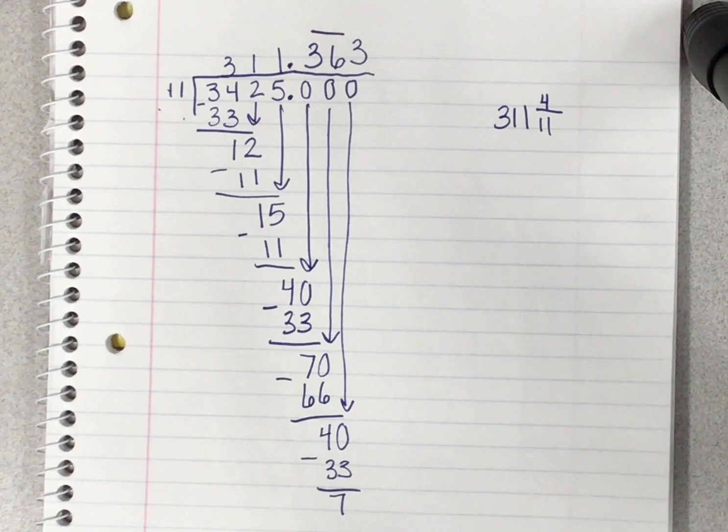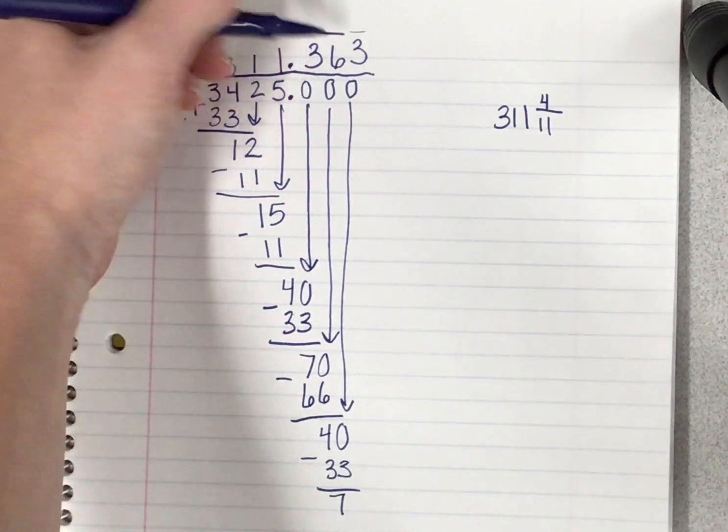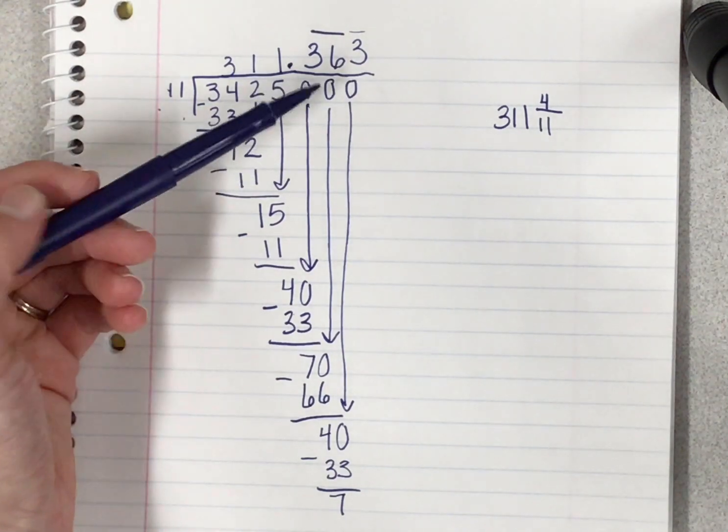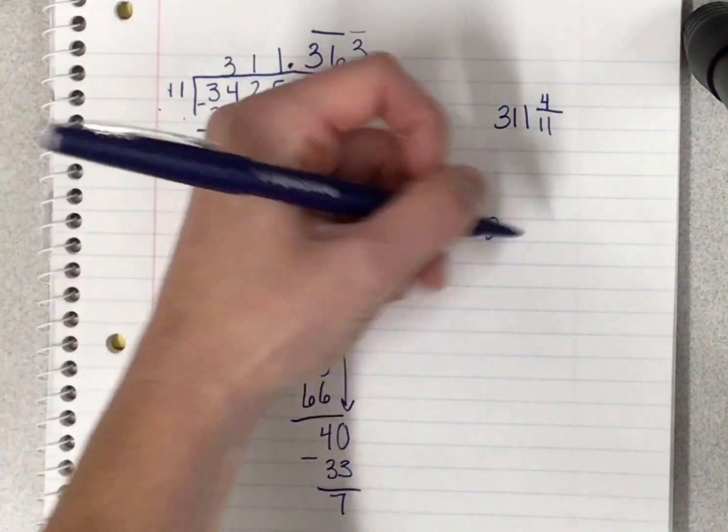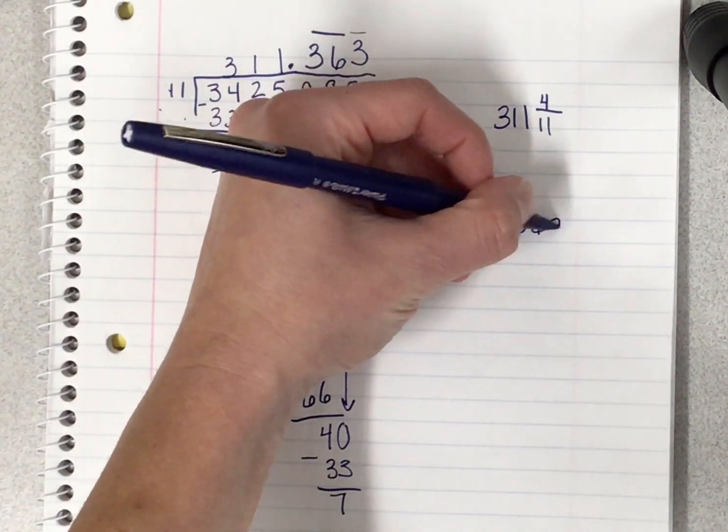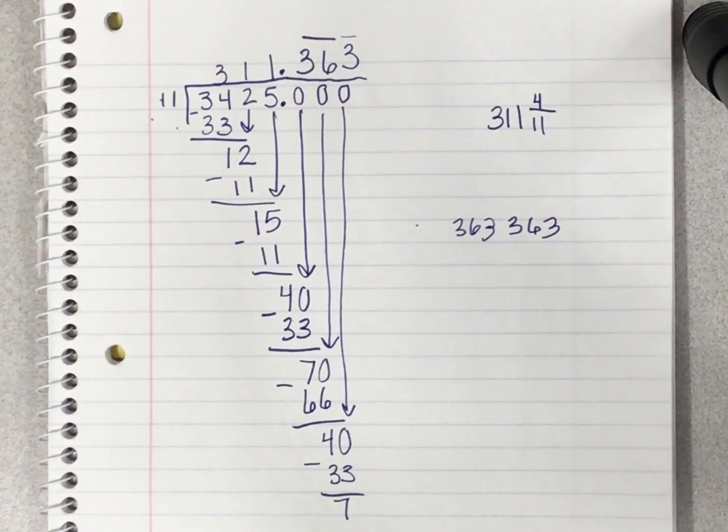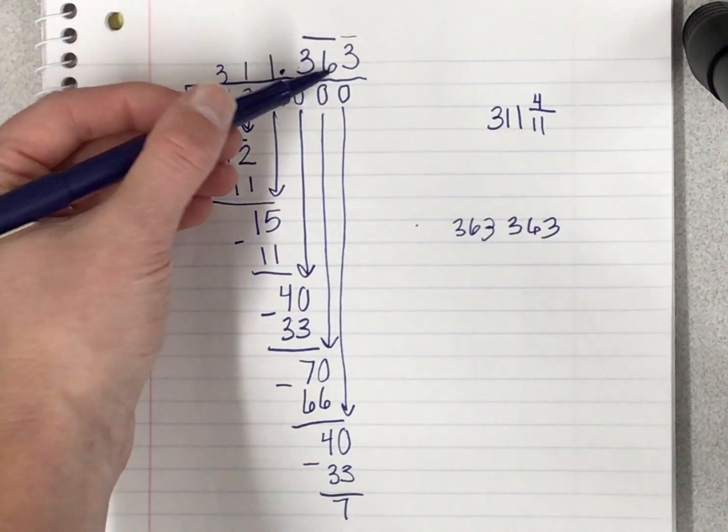Now, why didn't I write a repeating sign over the last 3? Well, the repetition is 3636. So if I were to put it over the 3, that would be saying that the repetition is 363, and what that means is another 3 is going to happen right after that 3, and that's not what's going to happen. It's going to be the 36.